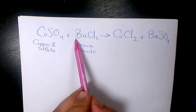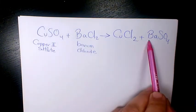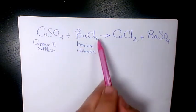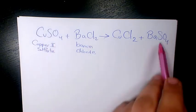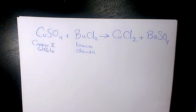Barium is 1 on the reactant side and on the product side is 1 as well. Cu is 1 on both sides. Chlorine is 2 and 2, and SO4 is 1 and 1. So that's all balanced.